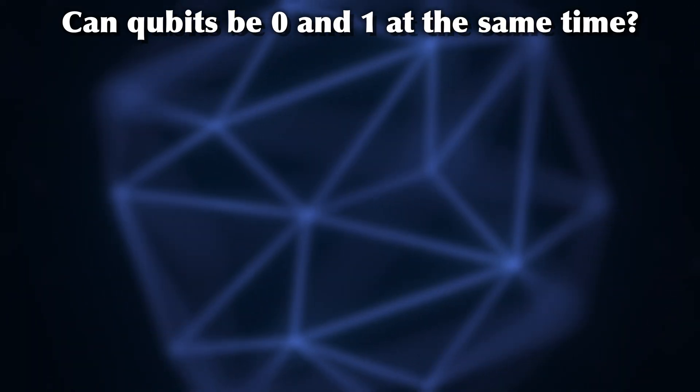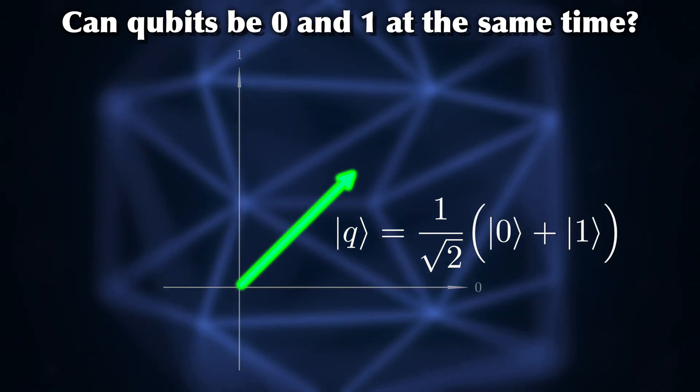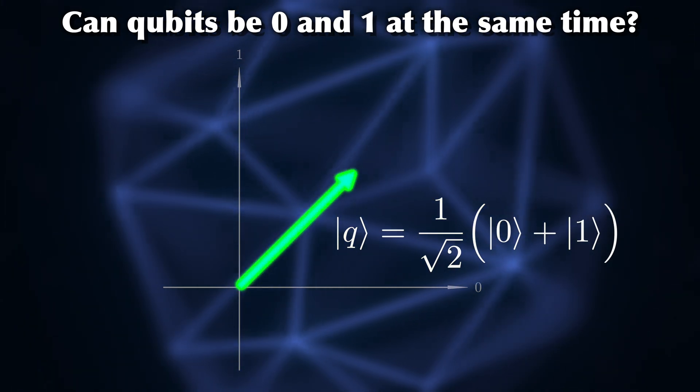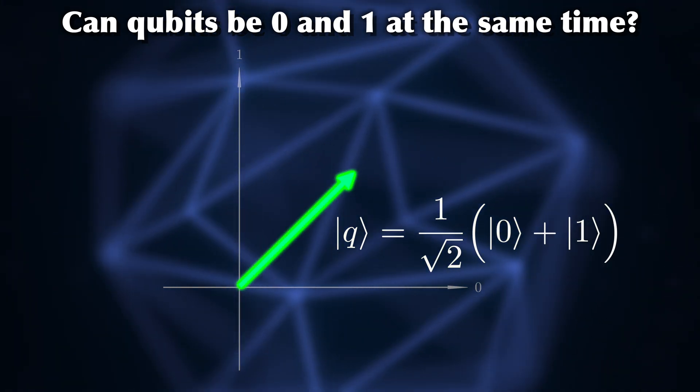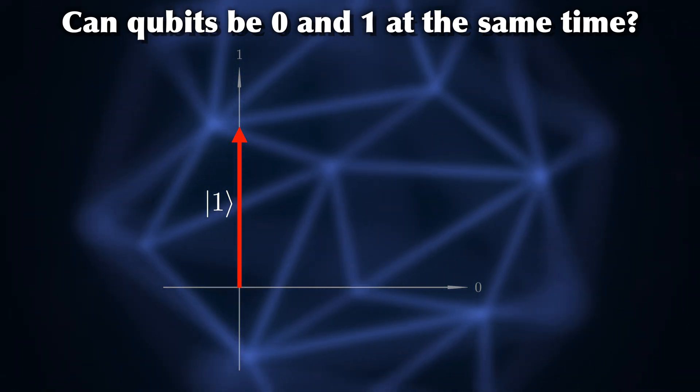Can qubits really be 0 and 1 at the same time? The main problem I have with this statement is that it's so vague. In a way, it is true, because an isolated qubit can be in a superposition of both 0 and 1, but whenever it is measured, it is either 0 or 1, never both at the same time. So I consider this statement to be incomplete and misleading and all in all just not very useful.